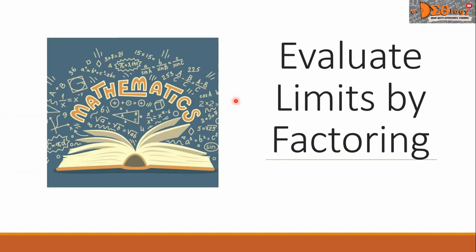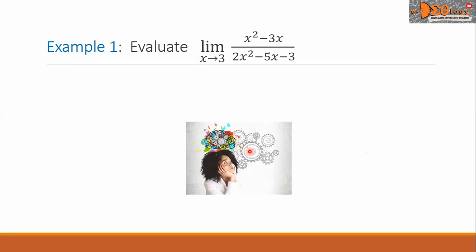Hi, everyone. Today we are going to evaluate limits by factoring. Example 1: evaluate the limit of the rational function x squared minus 3x, all over 2x squared minus 5x minus 3, as x approaches 3.